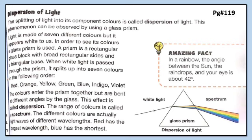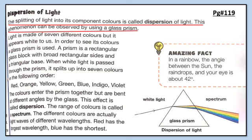Now open page number 119. The topic is dispersion of light. Dispersion means the splitting of light into its component colors. The splitting of white light into its different component colors is called dispersion of light. This phenomenon can be observed by using a glass prism — a triangular shaped glass with two inclined sides. When white light passes through a prism, it splits into seven colors.